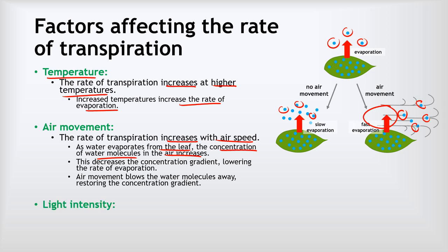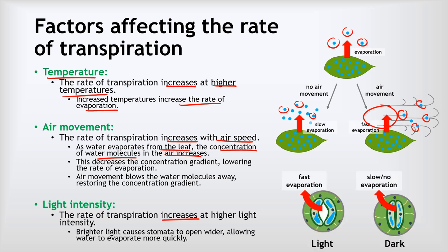The last factor to consider is light intensity. Light intensity increases the rate of transpiration because brighter light causes the stomata to open wider, allowing water to evaporate more quickly. In bright light, the stomata are opened wide because the guard cells have caused them to open, allowing much more water to evaporate out. In the dark, the stomata are closed, so very little or no water can evaporate.